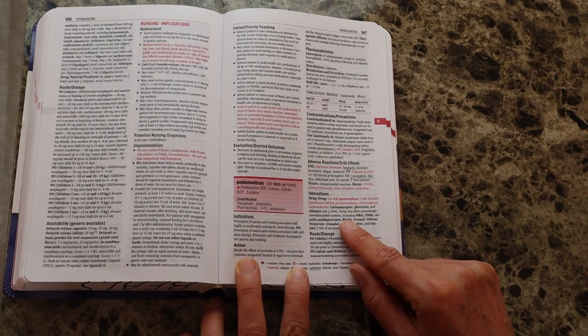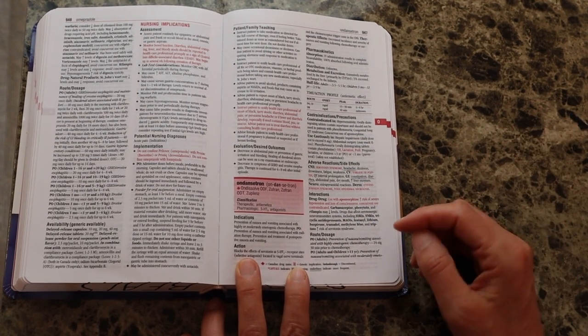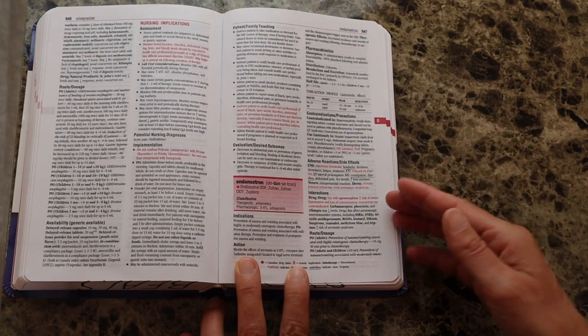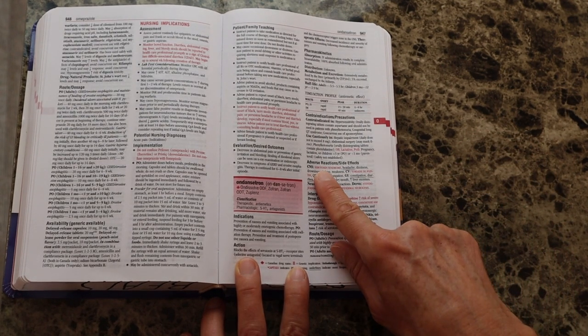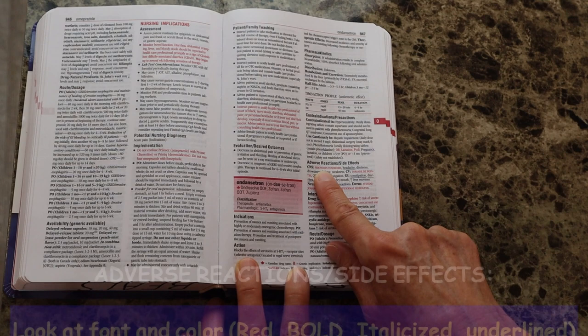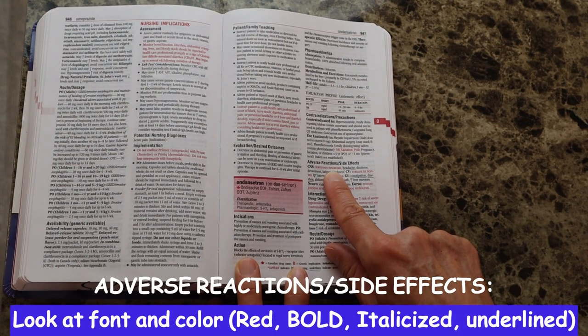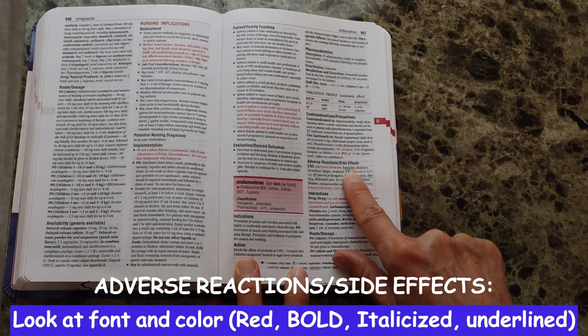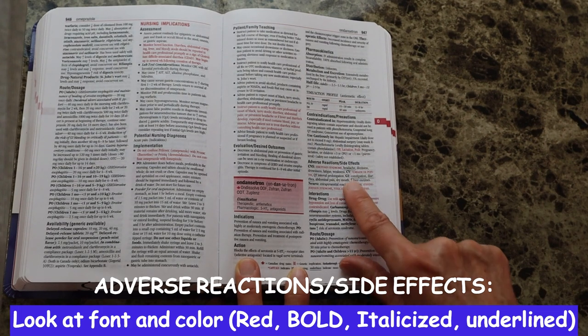Each drug book has a different way of letting you know which are the important ones. As you can see, with just one quick look at this, the ones in bold and red will be severe reactions. And then also there are some that are underlined.